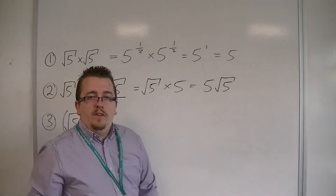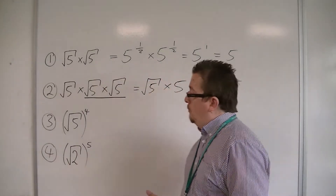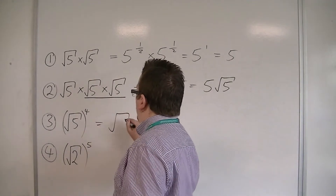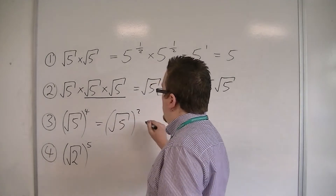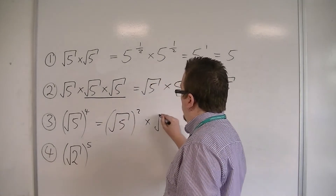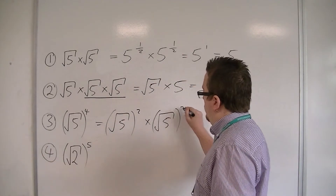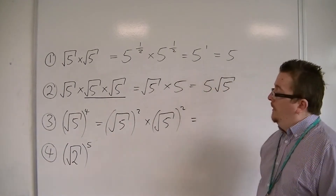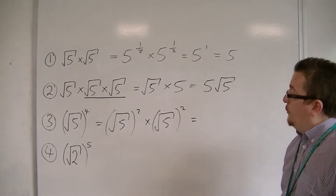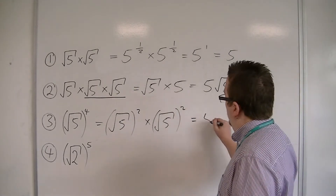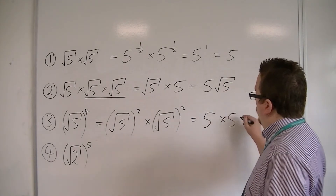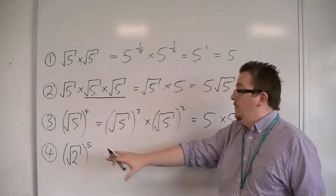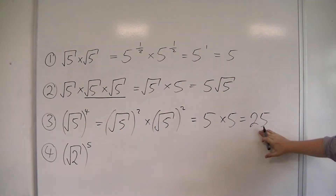If you've got root 5 to the power of 4, we know that that is root 5 squared times root 5 squared, using our understanding of indices. Now we know that root 5 squared is just 5, so we've got 5 lots of 5, and so root 5 to the power of 4 is just 25.